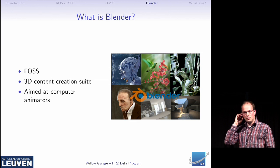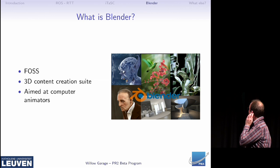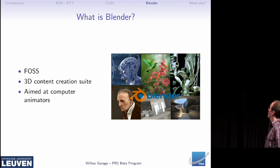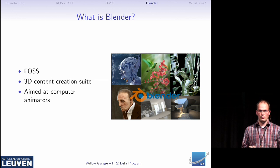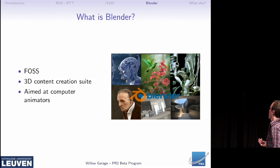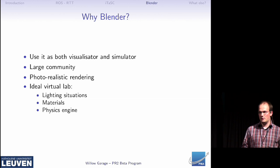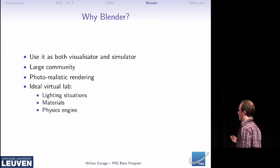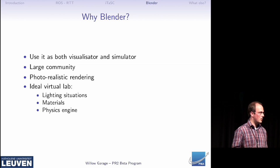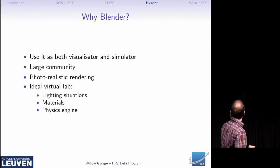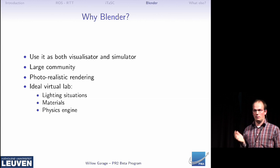The third part is we want to include Blender into ROS. What is Blender? Blender is a free and open source software package used to create 3D content. It's mainly used by computer animators, but it can also be easily used for robotics. The advantage — and I got a comment from many here that this is what Gazebo or Arvis is providing — is that Blender allows you to do both simulation and visualization in one framework. It has a large community. It provides photorealistic rendering, and we use it as our virtual lab to test algorithms before testing them on real robots.